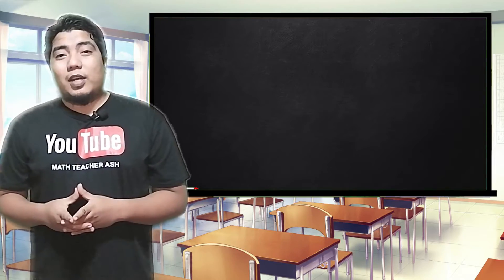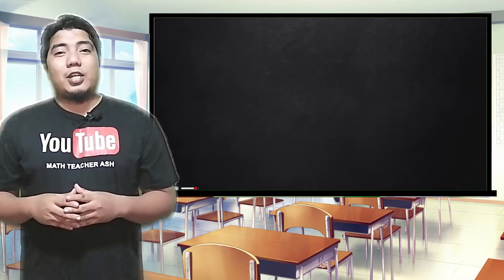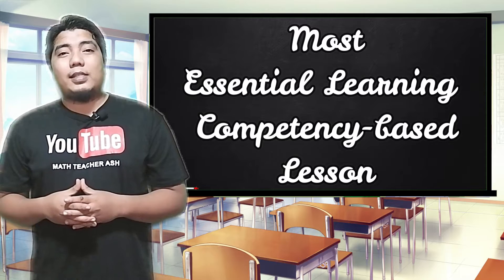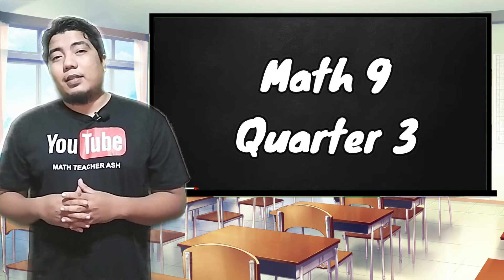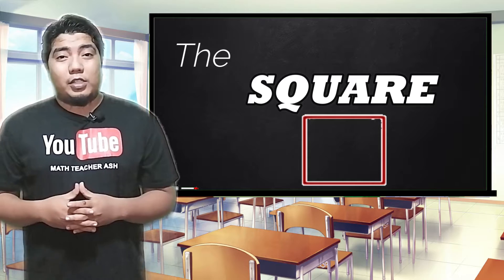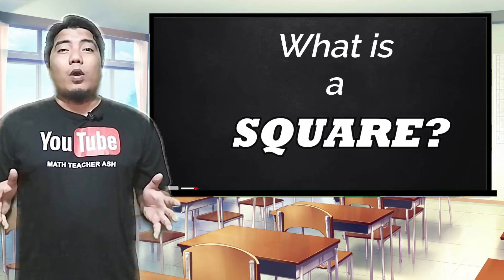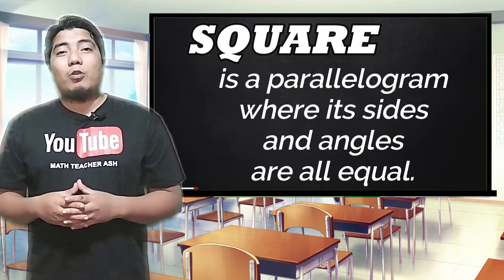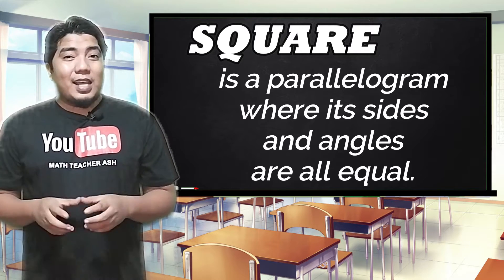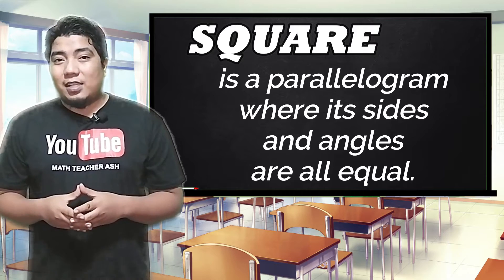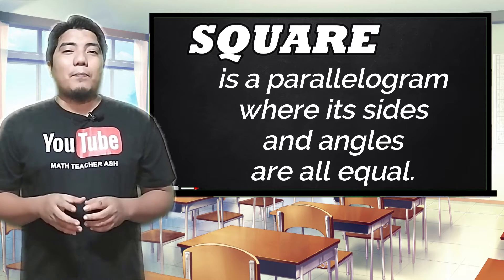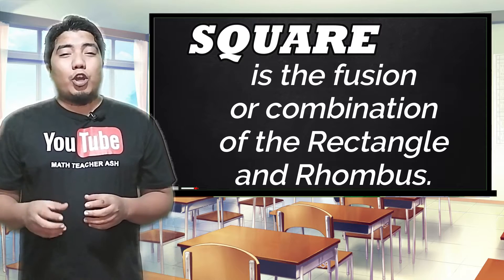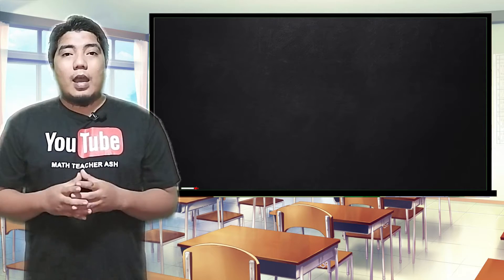Welcome to another session here in Math Learning with Sir Ash. Today, we're going to discuss the most essential learning competency-based lesson for Quarter 3 of Grade 9 Mathematics, which is all about squares. The first question is: what is a square? A square is basically another special parallelogram in which all of its sides as well as all of its angles are congruent. In another definition, a square is the fusion of the rhombus and the rectangle.